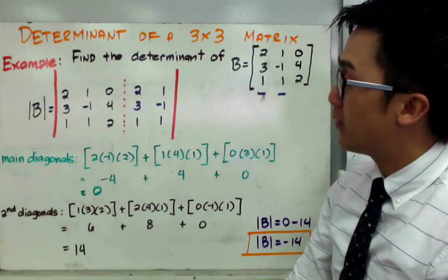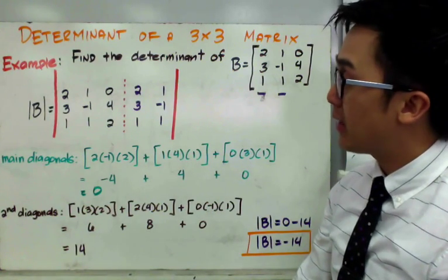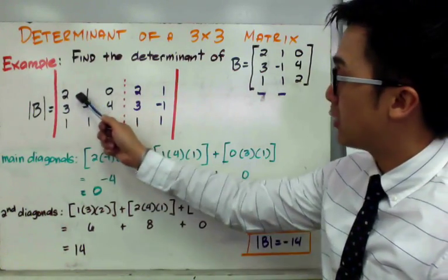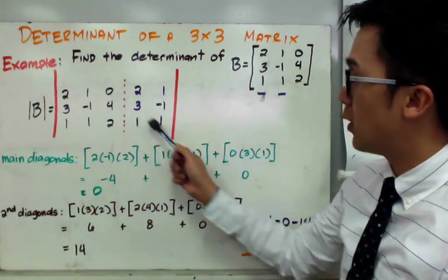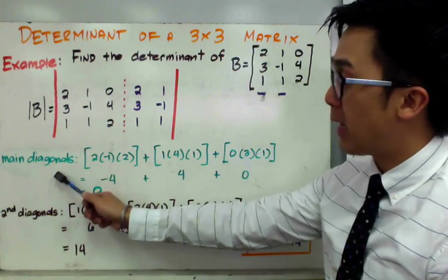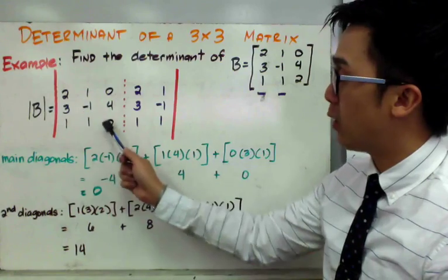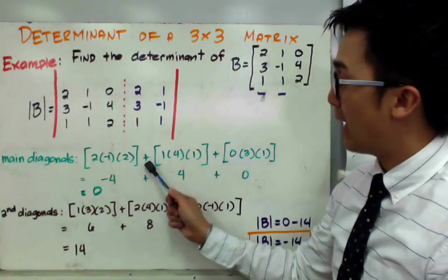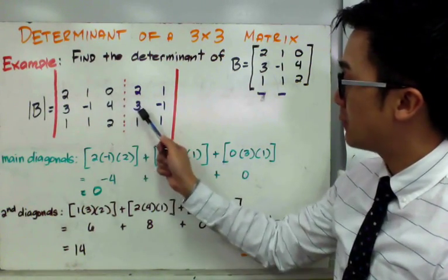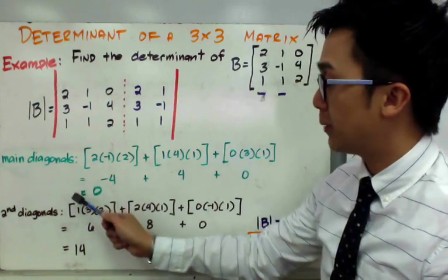To find the first diagonals, since we now have several columns, we identify three groups going from the main diagonal direction. The first group is 2, negative 1, and 2; the second group is 1, 4, and 1; the third group is 0, 3, and 1. We multiply each group and add them together: 2 times negative 1 times 2 gives negative 4; 1 times 4 times 1 gives 4; and 0 times 3 times 1 gives 0. Simplifying, the sum of the main diagonals equals 0.